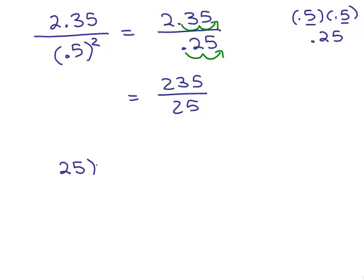We can reduce that fraction or do long division. Let's do long division. 235. 25 doesn't go into 23, so we think how many times does 25 go into 235? I think of quarters. How many quarters could you make from $2.35? I think that's 9.